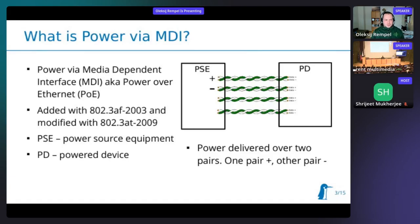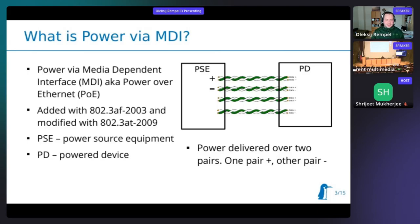First of all, this power delivery thing and its implementation come from a very old and dusty IEEE specification that most of you probably know as Power over Ethernet. It's all about delivering power over twisted pairs — precisely over two twisted pairs — and it was added to the final specification in 2003 as amendment 802.3af.